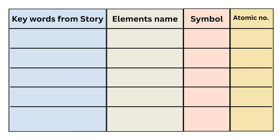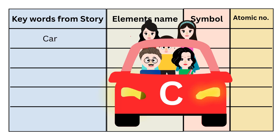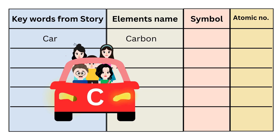Proceeding forward, now you have to remember the events from the story to recall the element names. Remember that the whole family went in a car — so 'car' is a key word, and from that you have to remember the sixth element name, that is Carbon. Symbol is C, and atomic number is 6.